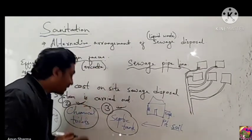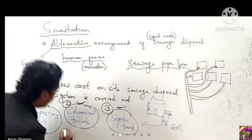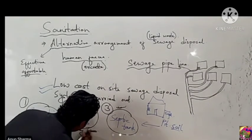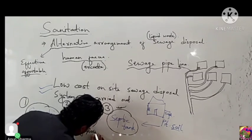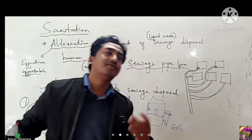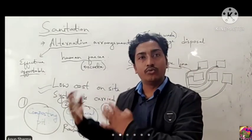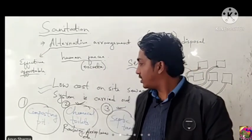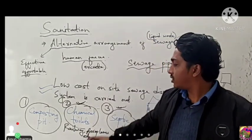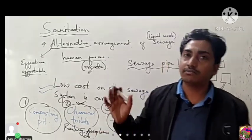Chemical toilets can also be used. They are mostly used in aeroplanes and railways. Previously in trains, human excreta was thrown directly onto the railway track. But nowadays, due to chemical toilets, the waste gets decomposed through a chemical process at the same place, resulting in good hygiene practice.